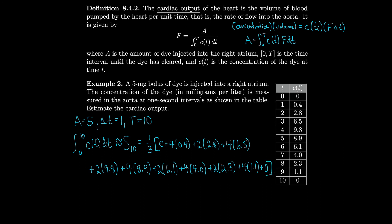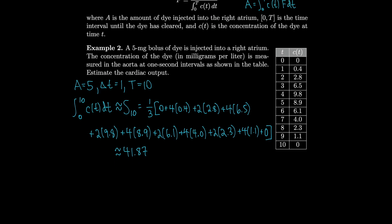And then we do the math, we get all this is approximately 41.87. So that's what the integral is. Remember, we have to take our A and divide it by the integral to get the cardiac output. So let's do that now.